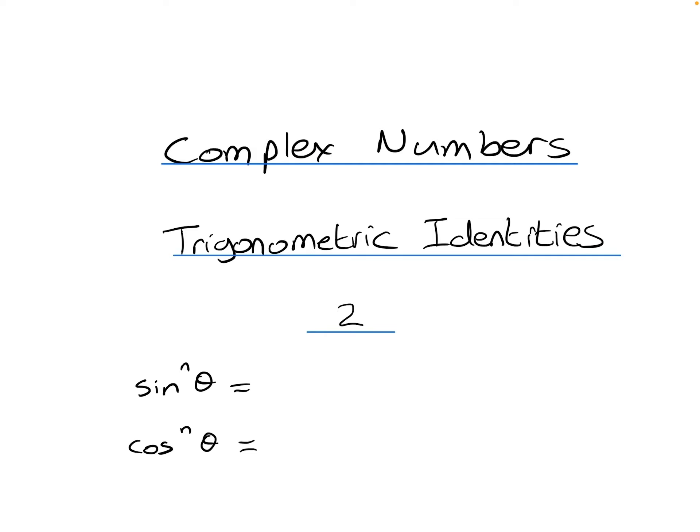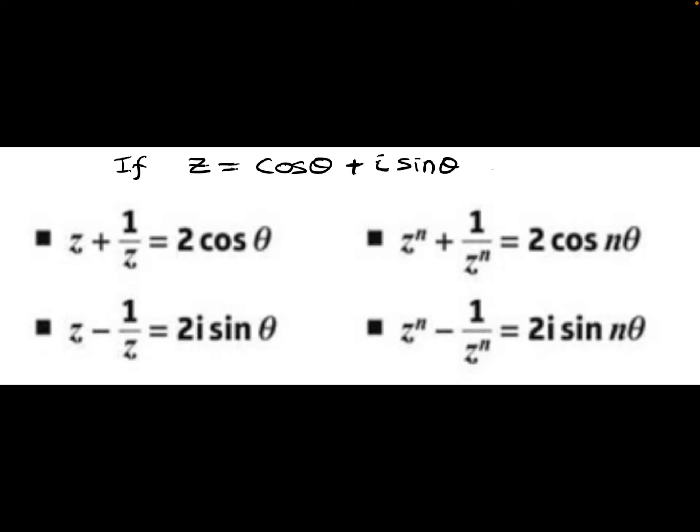Before we get into proving those identities, there are a couple of standard results we need to look at. If z equals cos theta plus i sine theta, then z plus 1 over z simplifies to 2 cos theta, and z minus 1 over z simplifies to 2i sine theta. With powers, z to the power n plus 1 over z to the power n equals 2 cos n theta, and z to the power n minus 1 over z to the power n equals 2i sine n theta.